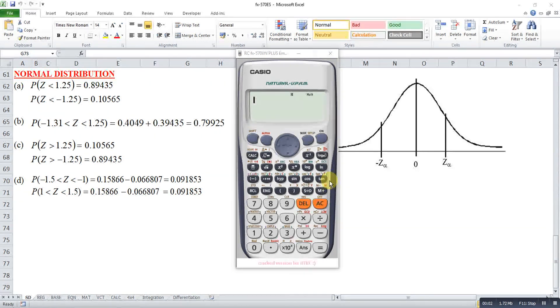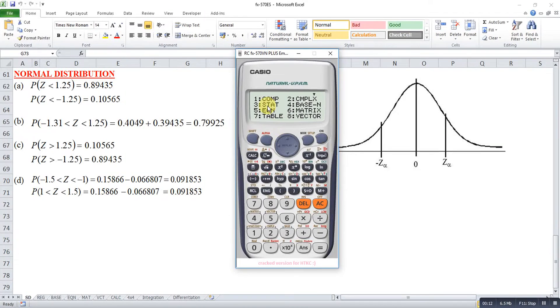Hi, this is Asim. Today I would like to share how to use a calculator to find the probability of normal distribution. First, we press Mode. Then we look for statistic (stat), which is 3. Then we press Escape.